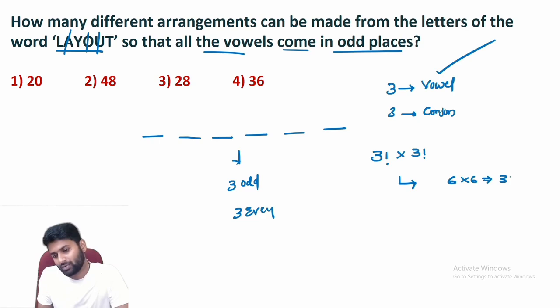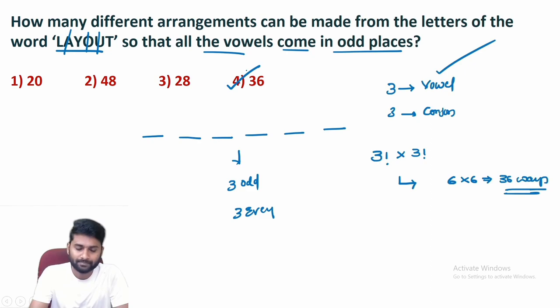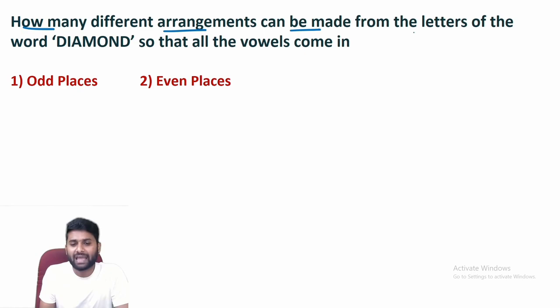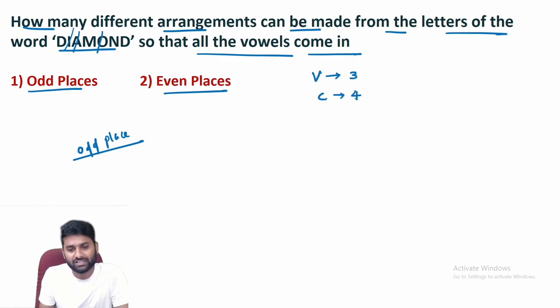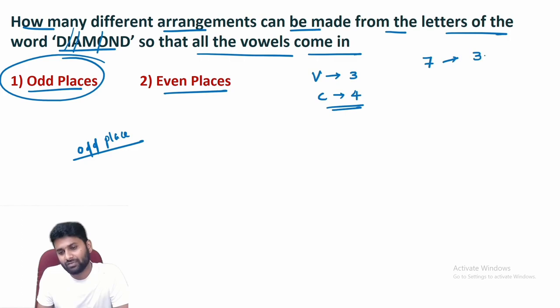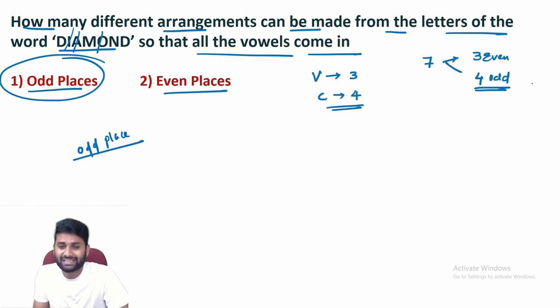Next question: how many different arrangements can be made from the letters of DIAMOND so that all vowels come in odd places or even places? First, odd places. In DIAMOND, number of vowels is 3 and number of consonants is 4. It is a seven-letter word, so we have four odd places and three even places. We have to place three vowels in the four odd positions.